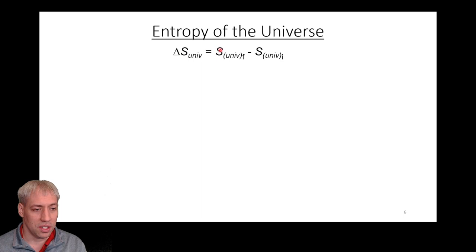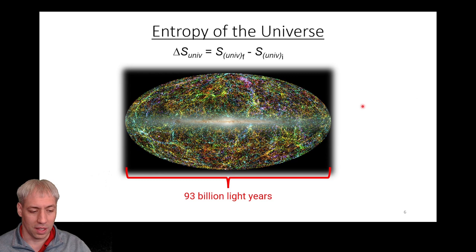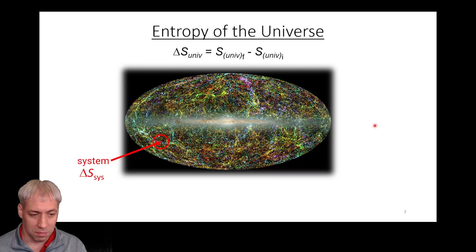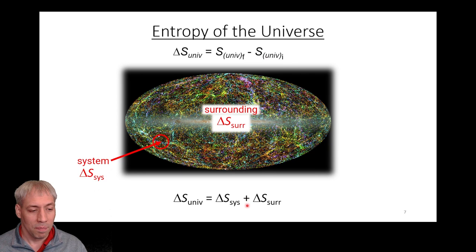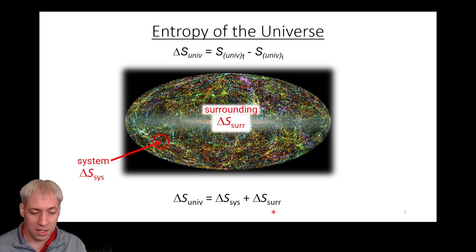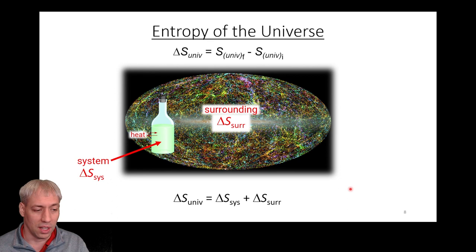To use delta S universe you need the entropy of the final state and the entropy of the initial state. That's hard, because the known universe is something like 93 billion light years across. So we think about our system as a very small fraction of that, and our surroundings as everything else. If we know what happens in the surroundings and the system, we can calculate delta S of the universe. We redefine it as delta S universe equals delta S of the system plus delta S of the surroundings.